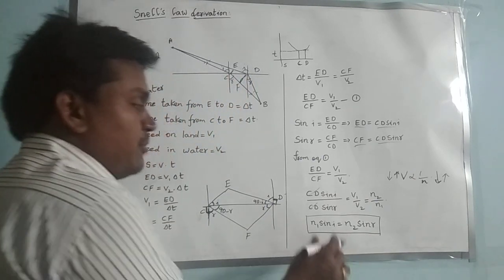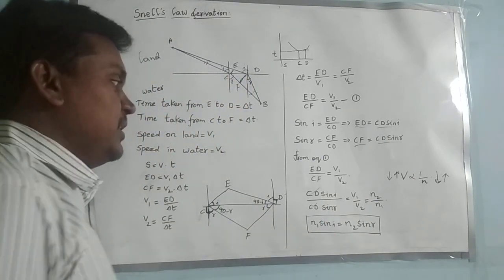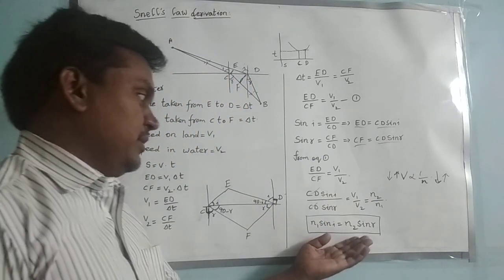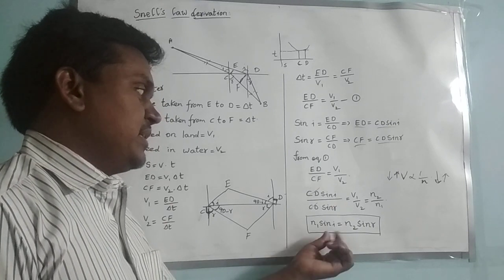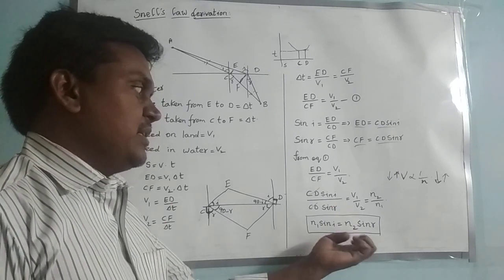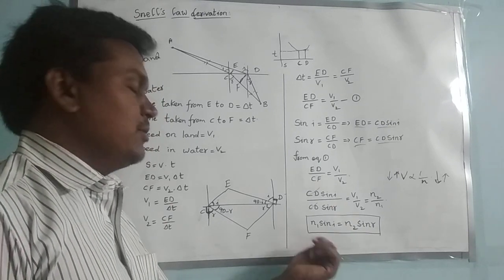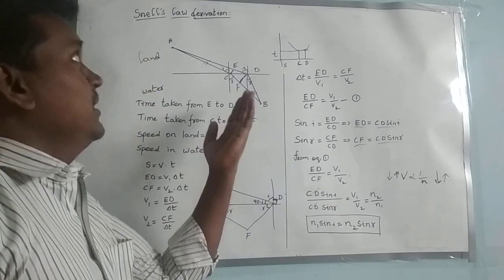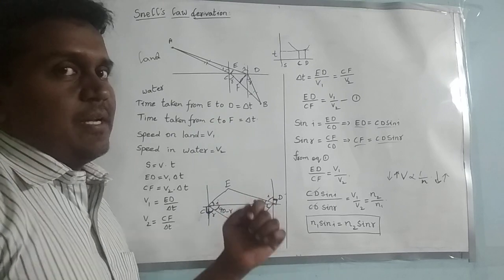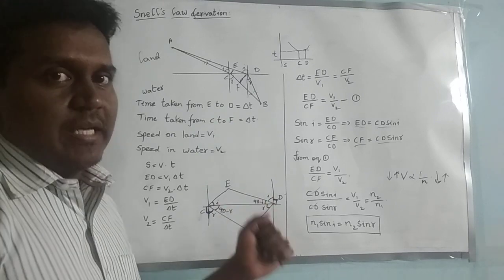So we came to a conclusion that sine I and sine R is constant — N1 sine I equals N2 sine R. This is Snell's law. Thank you.